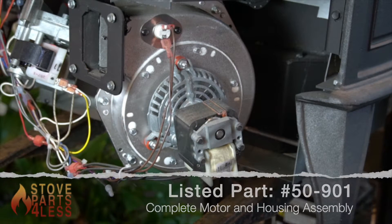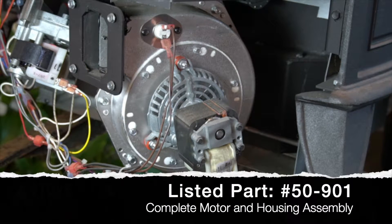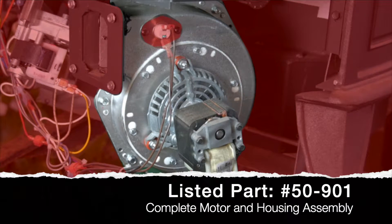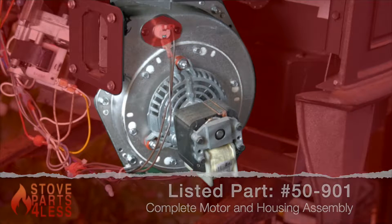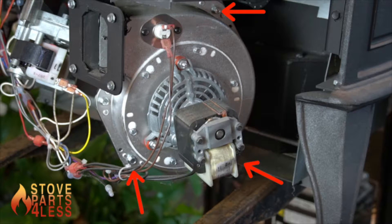Listed part 50-901 includes a motor with housing. To remove the housing from the stove, a 10mm socket will undo these five bolts, and the whole thing will come out from the stove.